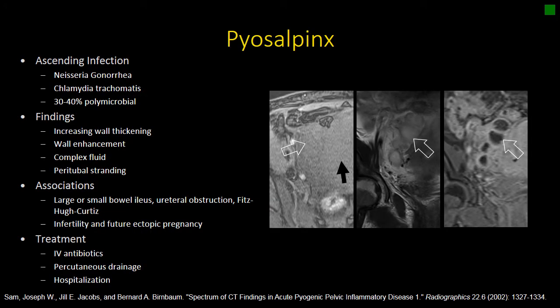When we think about pyosalpinx, as opposed to just salpingitis, we're talking about an acute bacterial infection that has almost turned the fallopian tubes into abscesses. We most commonly see this with Neisseria gonorrhea or Chlamydia. We're going to see increasing wall thickening, complex fluid that's not as T2 bright as we would expect for simple hydrosalpinx or salpingitis, and peritubal stranding with increasing thickening of the walls of the tubes.